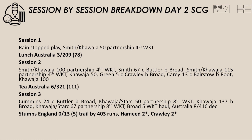Yet again Australia were able to grind England down and push on to get that 416 score. England would have been happy that Hameed and Crawley got through to stumps unscathed — Crawley getting a reprieve after Mitchell Starc bowled that no-ball following Crawley edging to the slips. A bit of luck there for England for once in this series. But overall it was another tough day for England, and they've got a lot of work to do in this test match. For Australia, they're definitely miles ahead and in the driving seat, and it looks like they're going to push on for a 4-0 victory.